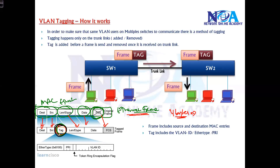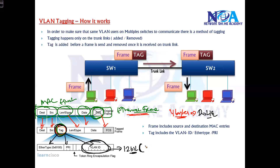Depending on which protocol is used — generally if you are using the 802.1Q protocol — four bytes of additional tag will be added. That tag includes multiple pieces of information. The main information is the VLAN ID, which is a 12-bit field in the case of 802.1Q encapsulation. This 12-bit field tells which VLAN the frame actually belongs to, and supports up to 4096 VLANs (0 to 4095).